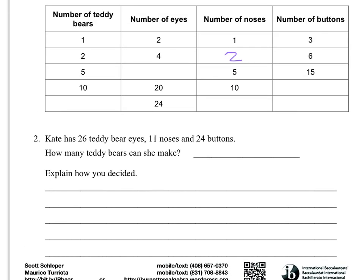This is a third grade standard, so you guys are in seventh grade, you should be able to do it fine. The second one says Kate has 26 teddy bear eyes, 11 noses, and 24 buttons. How many teddy bears can she make? Well, she can make whatever is the least amount of teddy bears that she's able to make with any one of these. Say she could make 20 teddy bears with that many eyes, 10 teddy bears with that many noses, and 5 teddy bears with that many buttons. Well, the most teddy bears she could make would be 5 then.